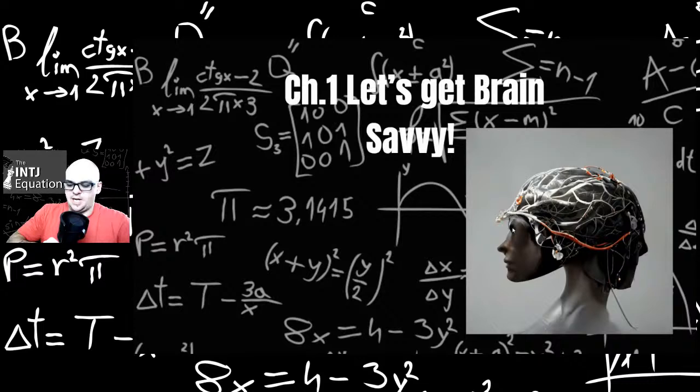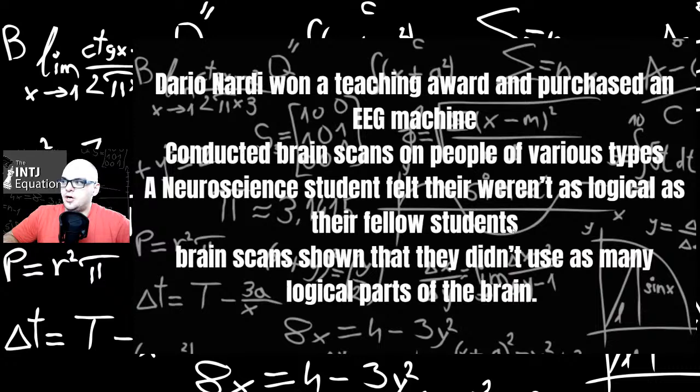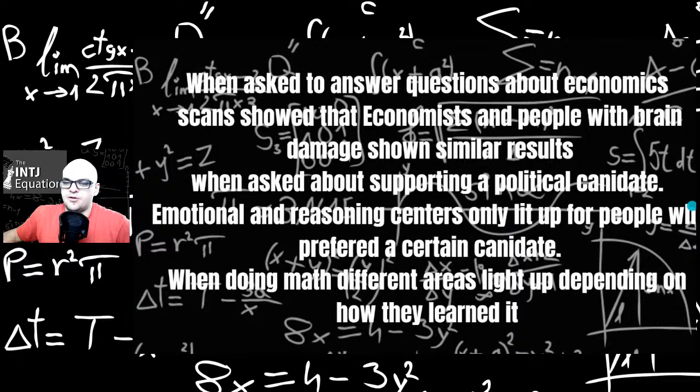The first chapter is called Let's Get Brain Savvy. Dario Nardi won a teaching award and purchased an EEG machine, which we talked about in The Body Keeps the Score by Bessel van der Kolk. It's basically a machine that scans the activity in your brain. He conducted brain scans on various MBTI types, personality types. A neuroscience student felt they weren't as logical as their fellow students. Brain scans showed that they didn't use as many logical parts in their brain. Not that they can't be more intelligent or smart, it's just they had feeling preferences rather than thinking preferences.